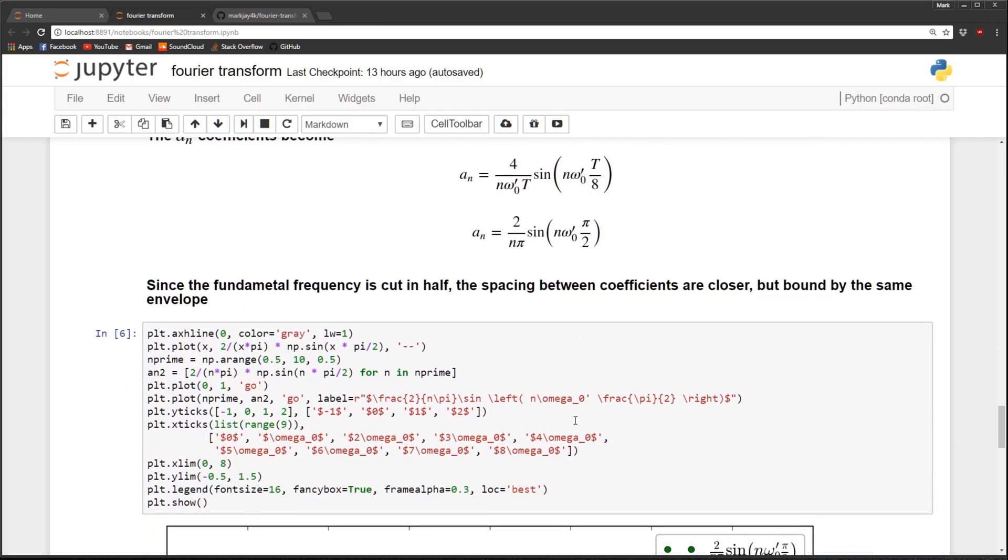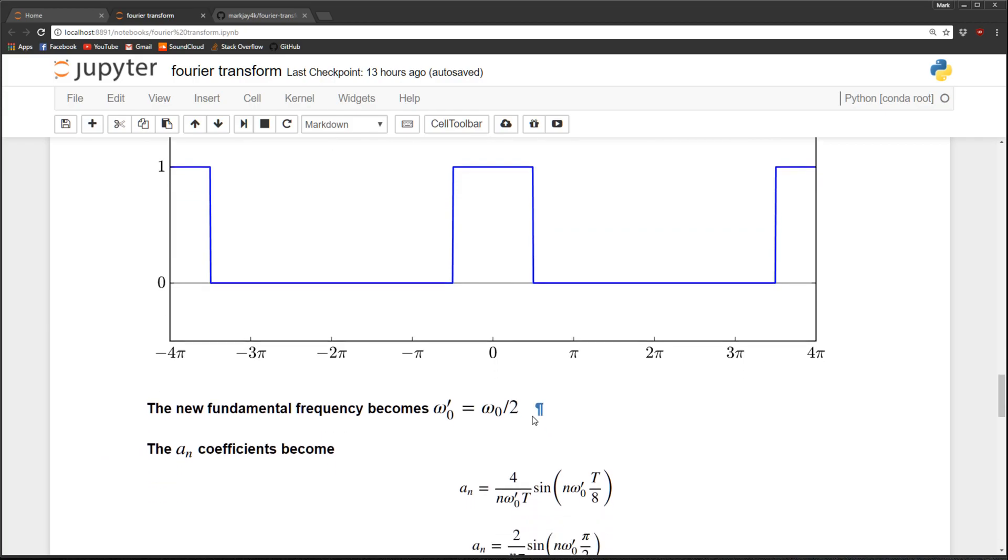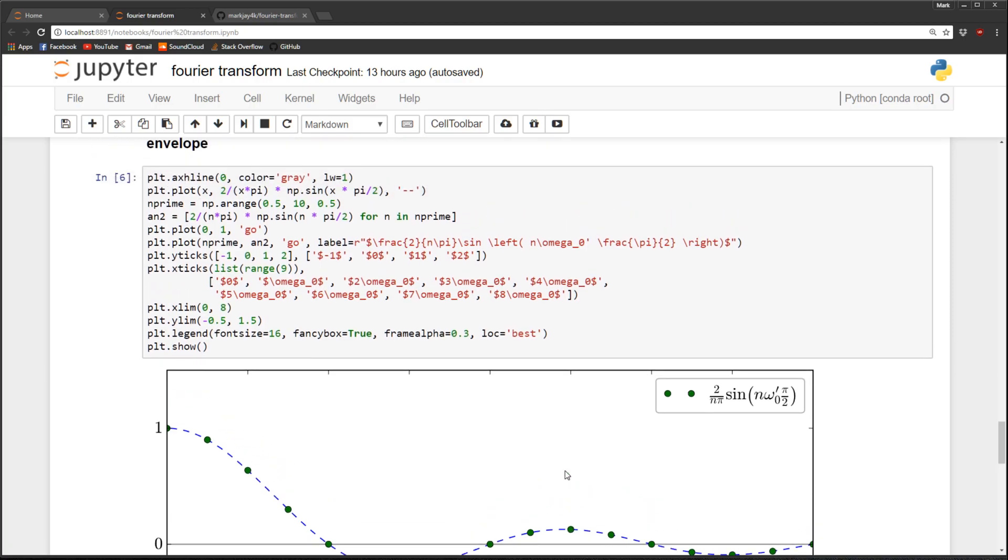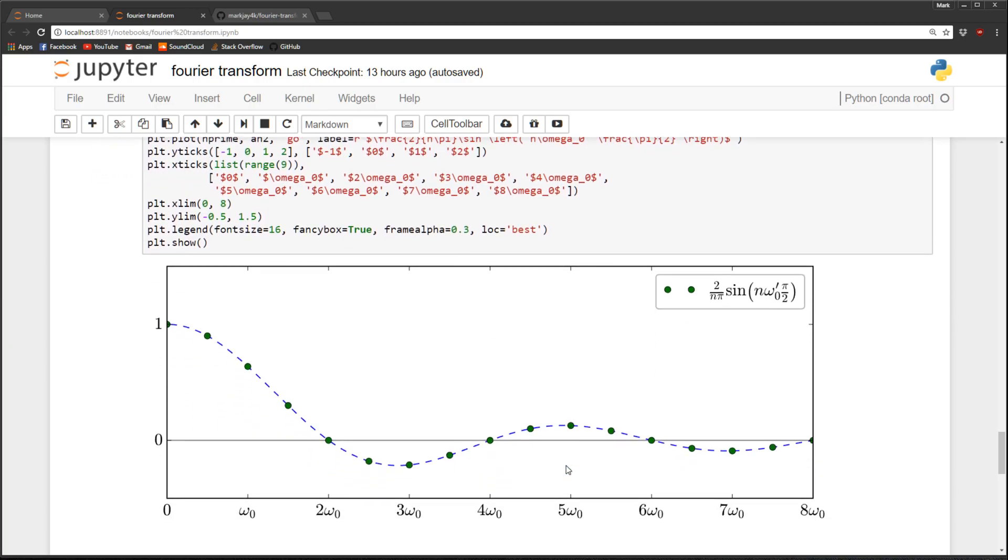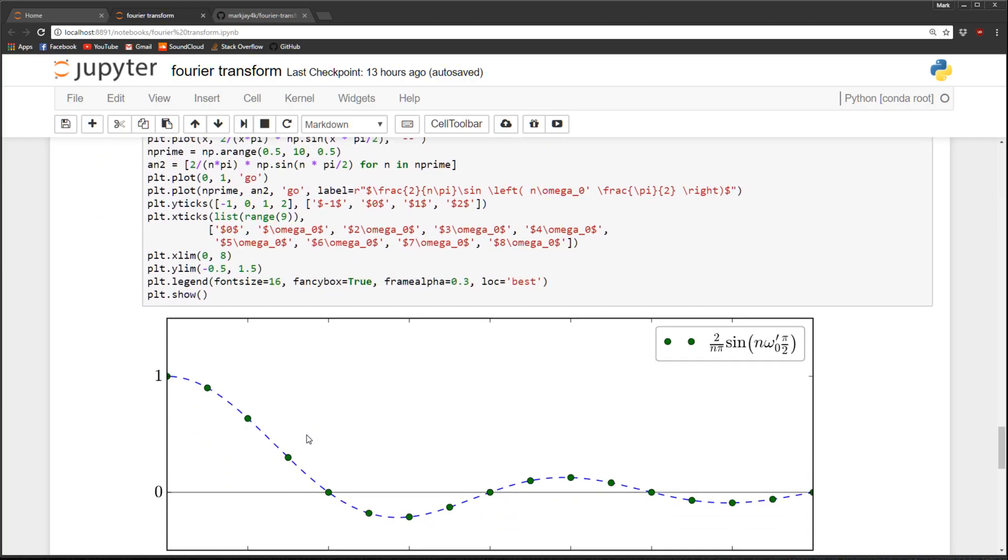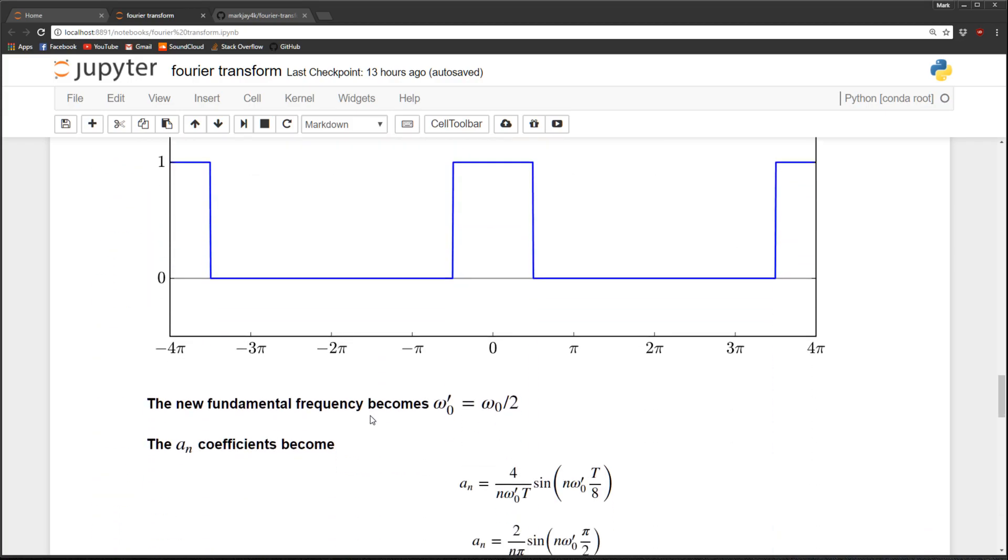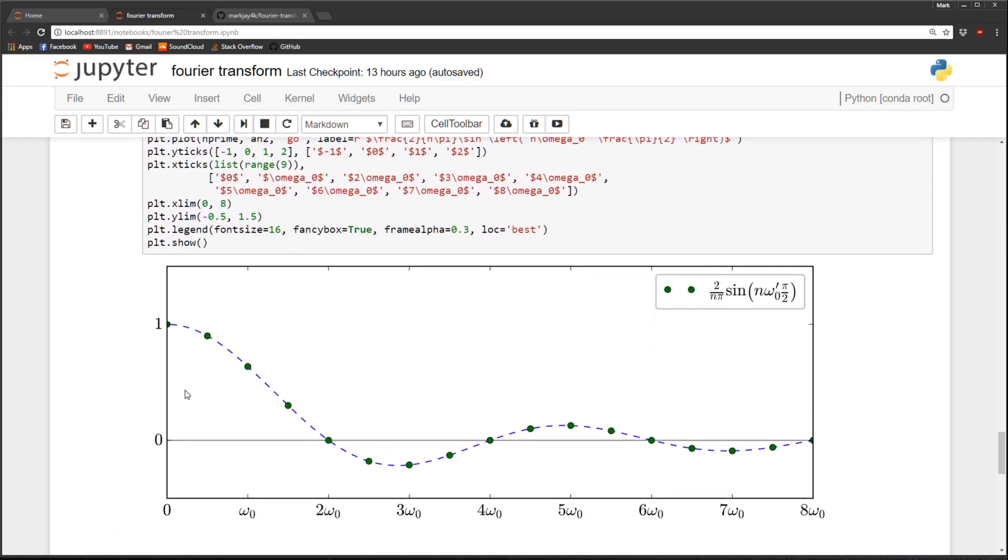And what that means is basically, since this is half of what the previous one is, the spacing between our dots is going to be half, so we're going to have more dots. We're going to have a dot in between each dot compared to the previous Fourier series. So we're just going to have more and more points along the same curve, but it is the exact same curve as the previous one. So you can see here we had these dots spaced out every omega naught, now they're spaced out every half an omega naught.